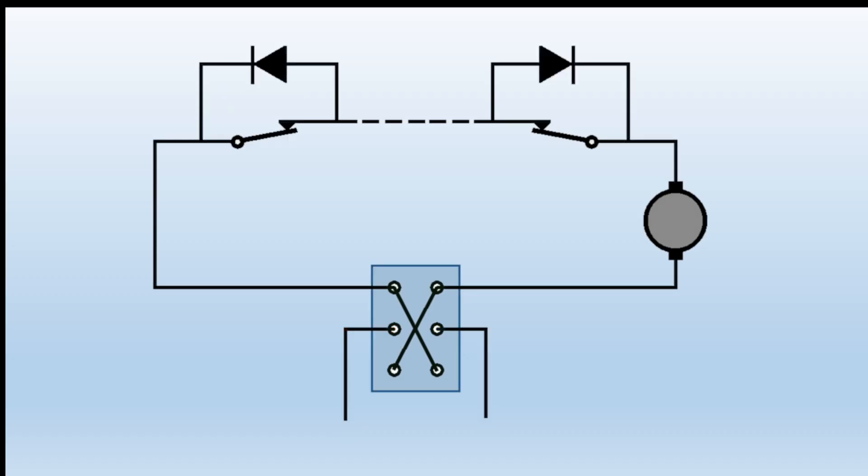And the way around it is to fit diodes across each microswitch. And that's it. Added two components onto the limit switches and we're good to go.